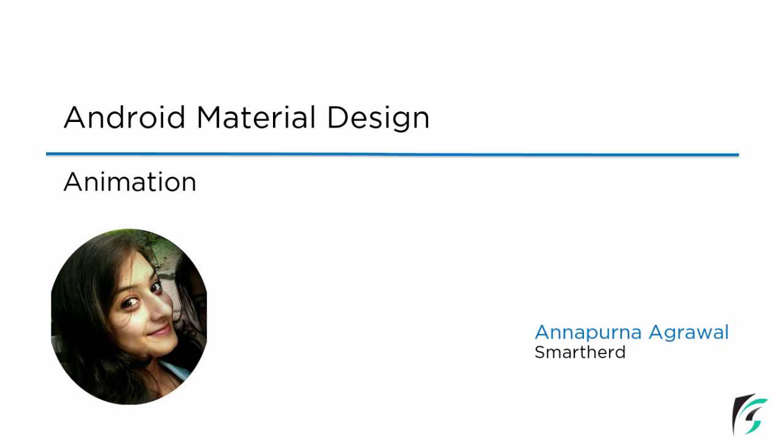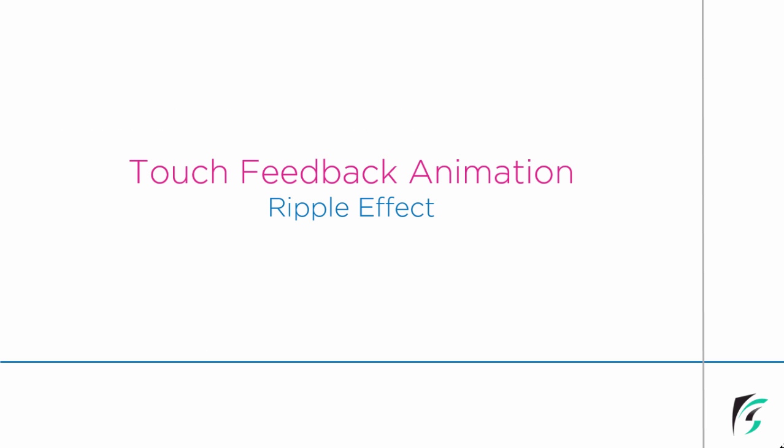In this video we will be learning about the touch feedback animation. As I have already said, the material theme provides us with some default animations. Touch feedback animation is one of them — it provides us with the ripple effect in our button. If we need to have this ripple effect in other elements or widgets in our application, we need to define it explicitly. In this video we will also learn how to customize it.